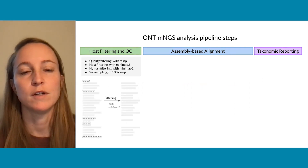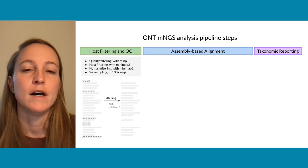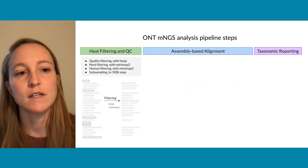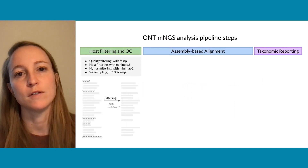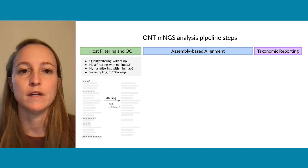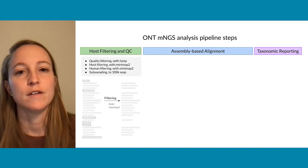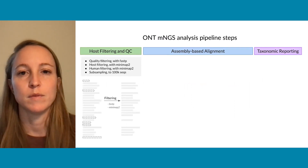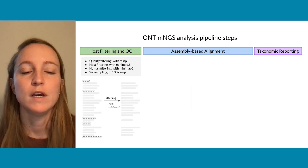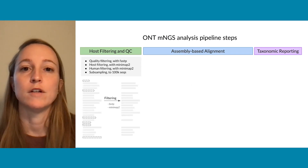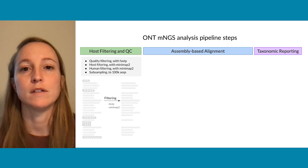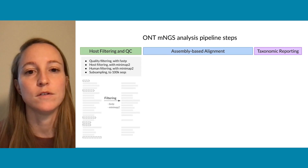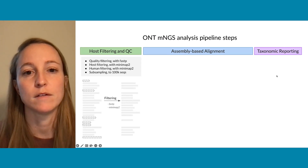Diving a little bit deeper, the host filtering and QC stage uses FAST-P to do quality filtering, then does host and human filtering using Minimap2, and finally subsamples to 100,000 sequences, which are then passed into the assembly-based alignment phase.